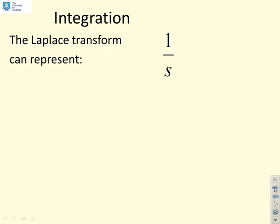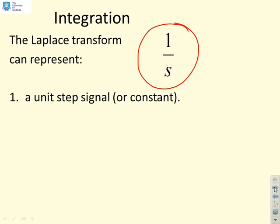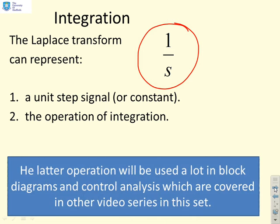Now what does this tell us? This 1 over s term actually has two different functions. We saw in the first few videos that 1 over s represents a unit step signal, or a constant. Equivalently, it actually represents the operation of integration. So you need to be careful with Laplace when you see 1 over s to understand clearly what it's doing, and that depends upon the context. You will notice, if you go into a lot more control, that the use of 1 over s as an integration operation is very common indeed.